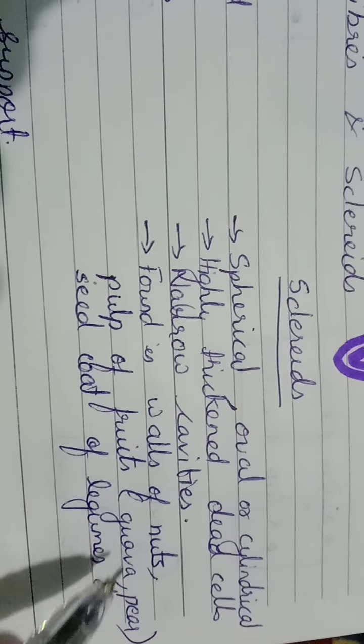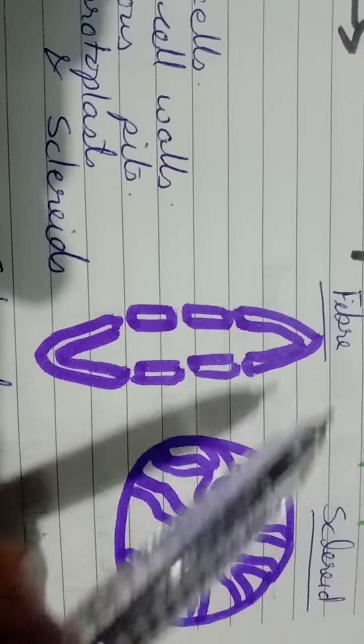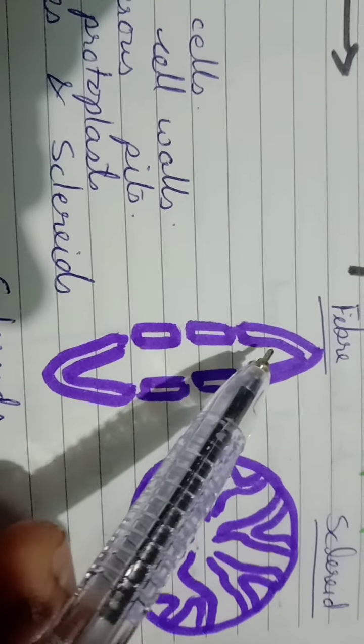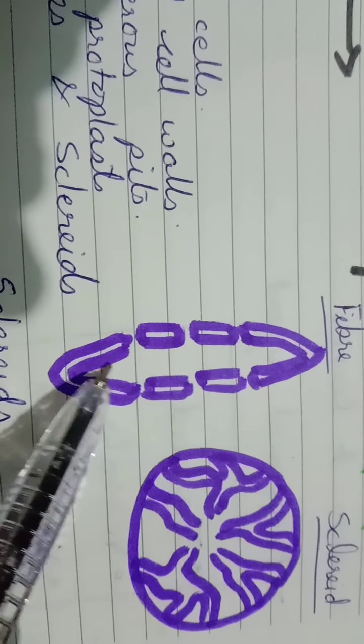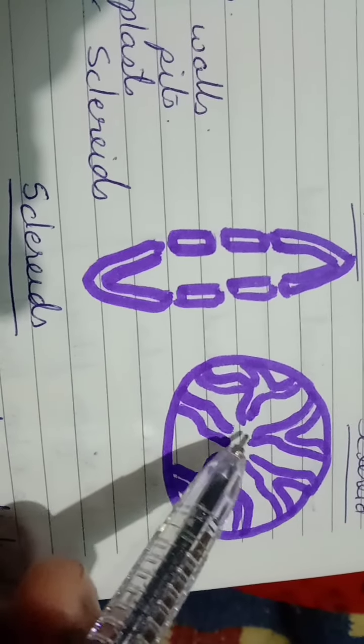Now I'll show you the picture. The first one is the fiber. This is the thickened cell wall. You can see the lumen - this is the lumen. It is long, elongated, having pointed structures. Whereas in this, the cavity is very small.